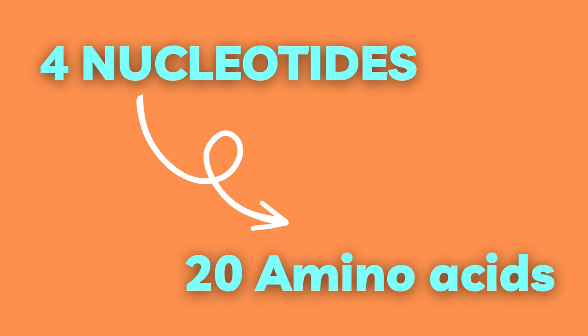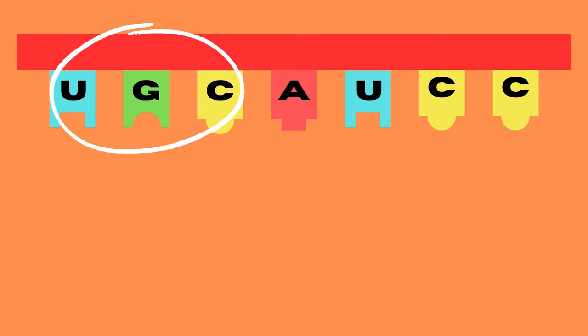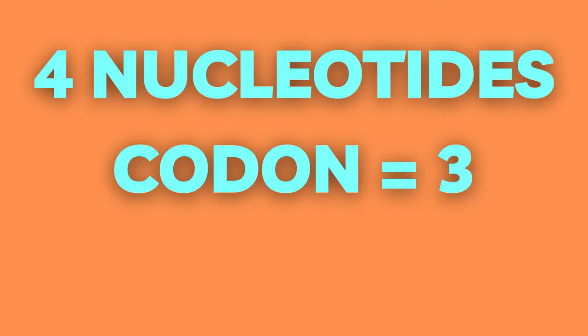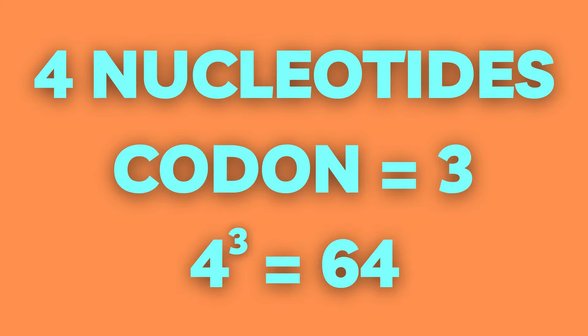The genetic code consists of four bases which code for 20 amino acids. The nucleotides in the mRNA are read in triplets called codons, which means that the total number of combinations are 4 to the power of 3, or in other words 64 possible combinations.